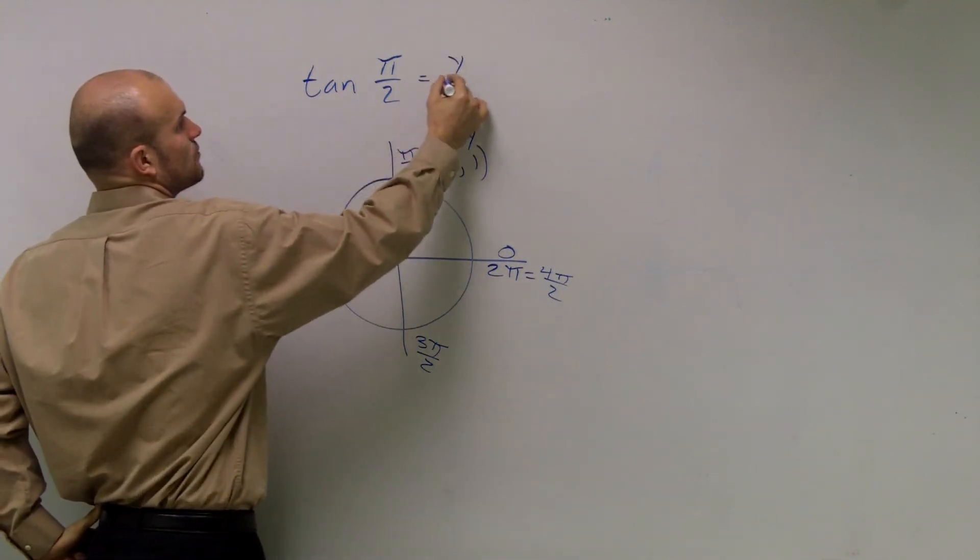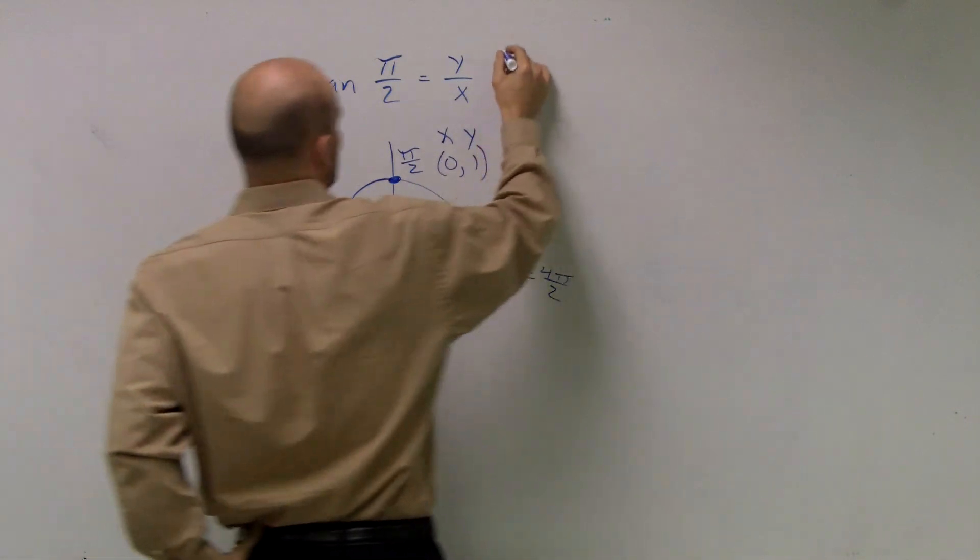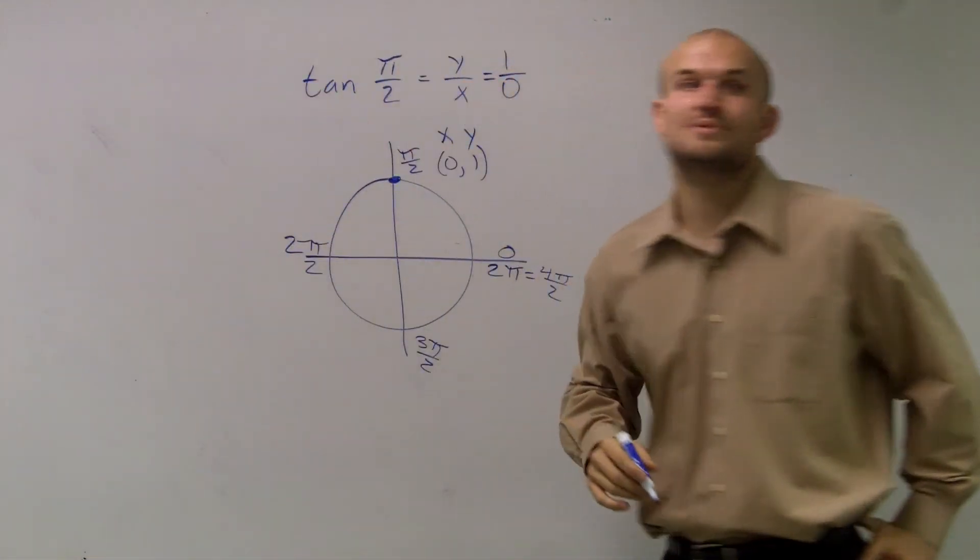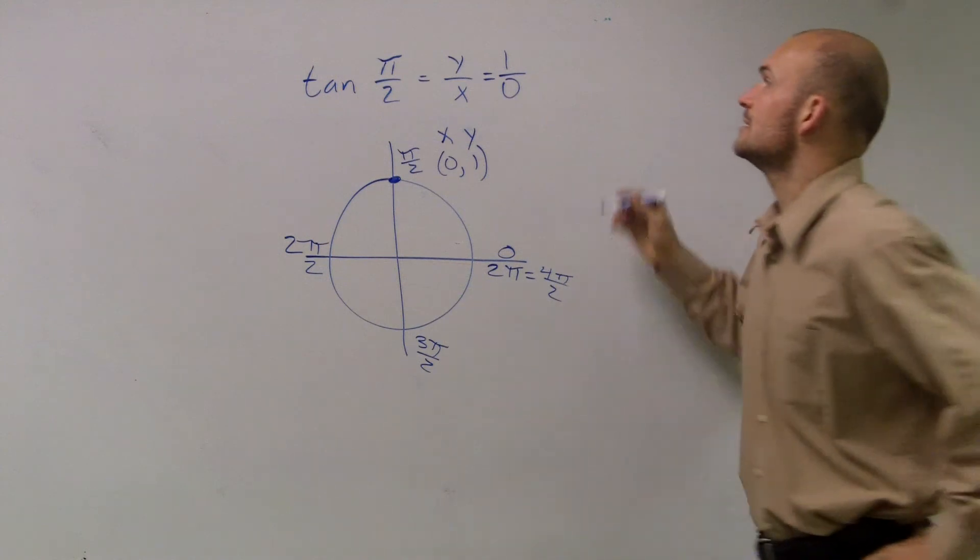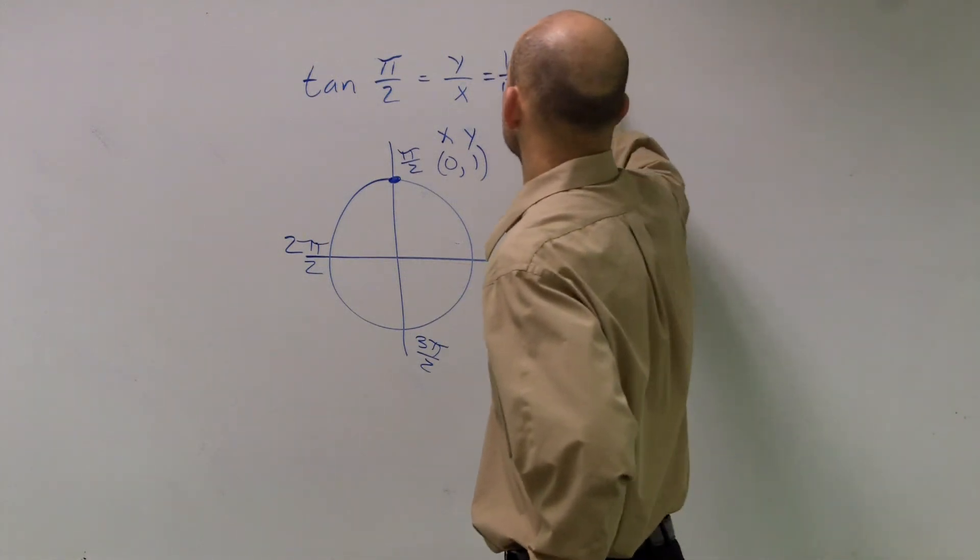And remember, tangent is y over x. So you have 1 over 0. And since we cannot divide by 0, tangent of π over 2 is undefined.